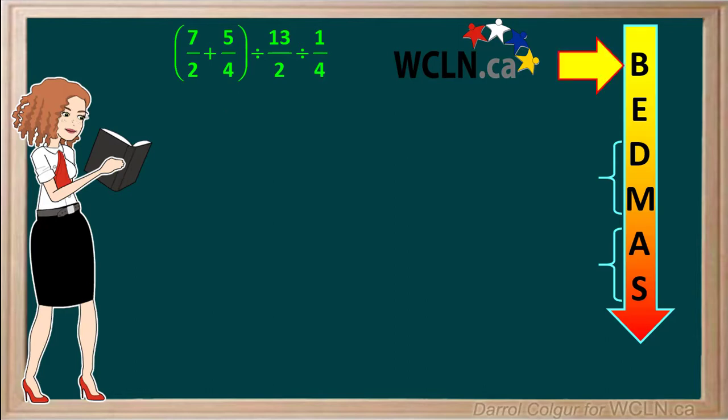B for brackets is at the top of BEDMAS. This means we do the operation within the brackets first.